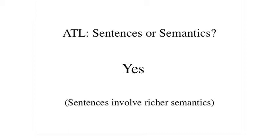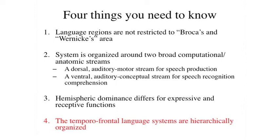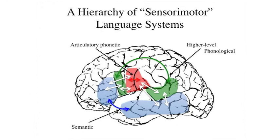Sentences are very rich in their semantics — they're combinatorial and may drive the system more than single words, which connects the imaging findings reasonably to the semantic dementia literature. To summarize all four points: if you look at regions implicated in different levels of language processing — semantics broadly tends to recruit temporal lobe regions and anterior frontal areas; phonological processing recruits the posterior superior temporal gyrus and posterior frontal regions; articulatory-level processing involves a more local circuit with somatosensory and motor cortex.